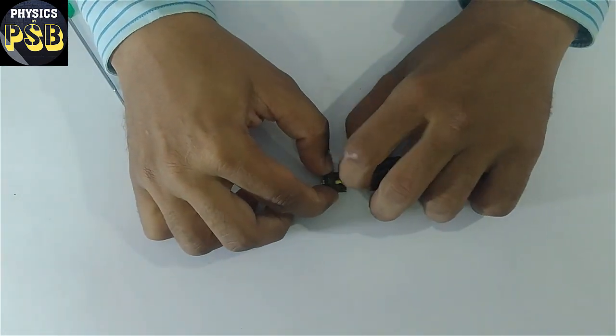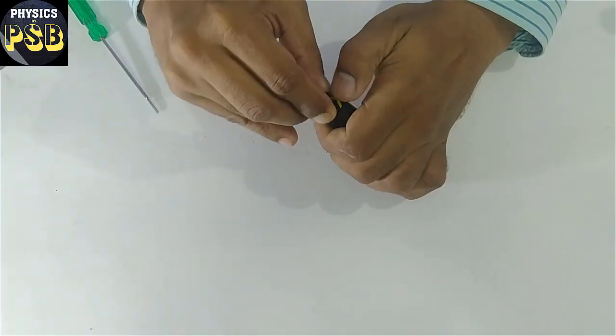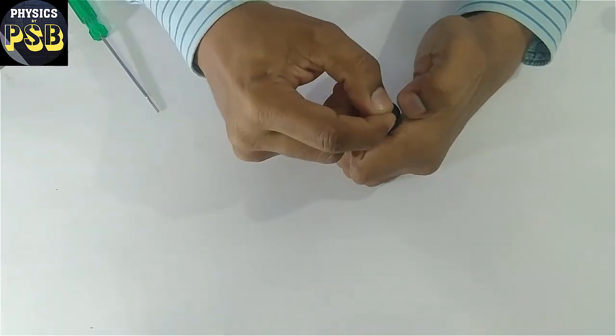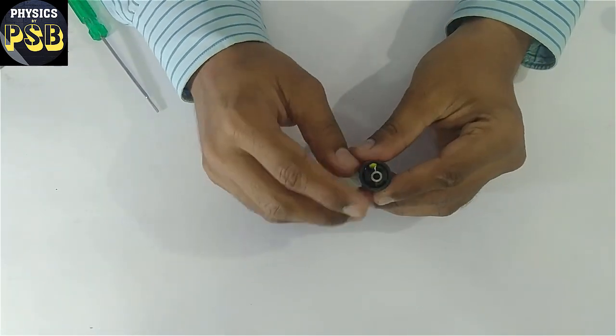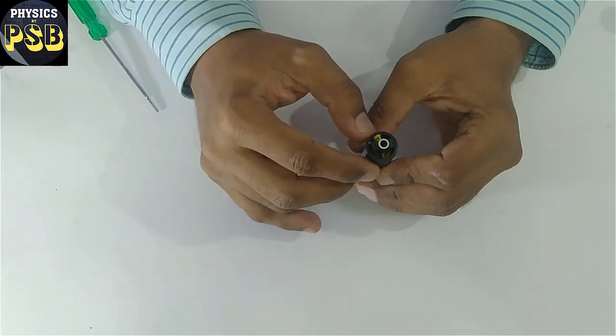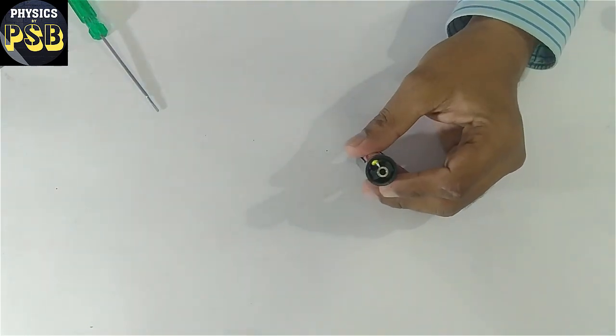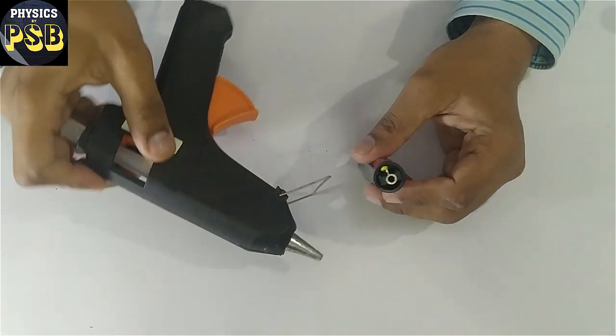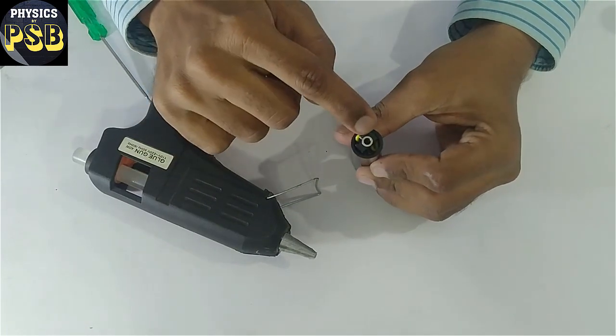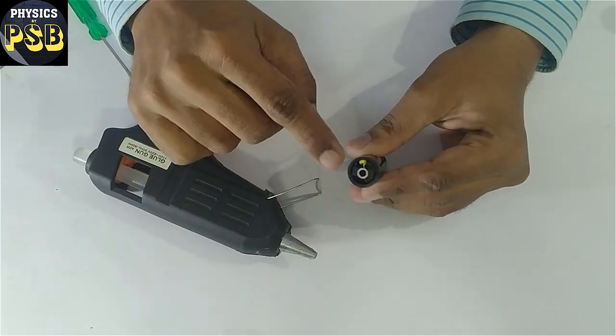Now push it inside like this manner. If it holds tight it's okay. If it is not so, then make use of hot glue gun and fill this portion such that it should not come off easily.